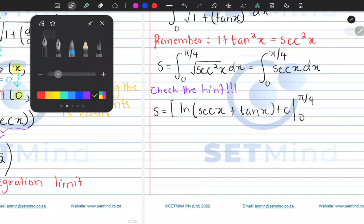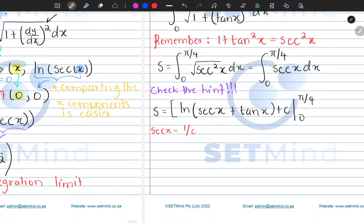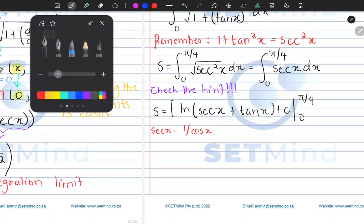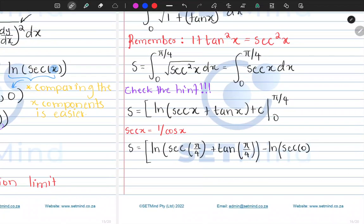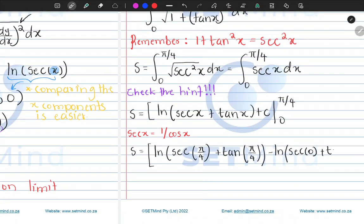Let's go ahead. I need to remind you that sec x is simply 1/cos x. When we put in π/4, I'll have ln of sec(π/4), which is the same as 1/cos(π/4), then plus tan(π/4), then minus ln of sec(0) plus tan(0).